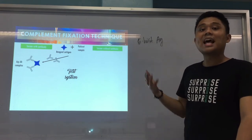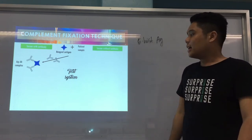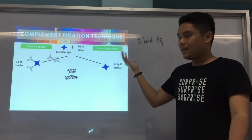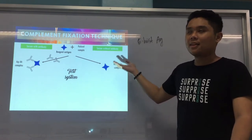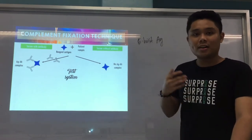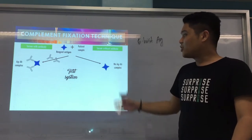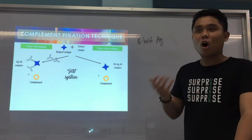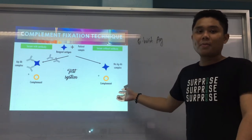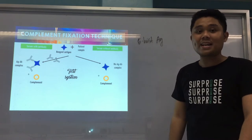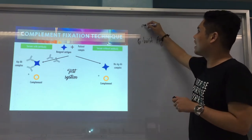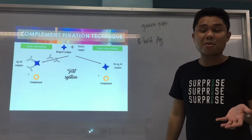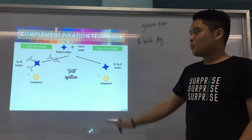In the other scenario, if the patient doesn't have any antibodies, the reagent antigen — your Entamoeba histolytica antigen — is free. No antigen-antibody complex is formed. Now we add the complement. Our source of complement in the testing system is usually from guinea pigs. We add the complements, and since there is an antigen-antibody complex present in the positive case, the complement will bind to that antigen-antibody complex — this is complement fixation.